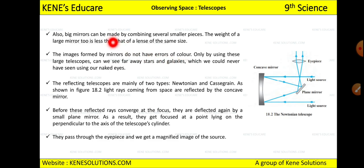Also, big mirrors can be made by combining several small pieces of mirror. The weight of a large mirror is also less than that of a lens of the same size. There is a huge difference between a lens and a mirror — the lens has to refract light, while the mirror simply reflects it.